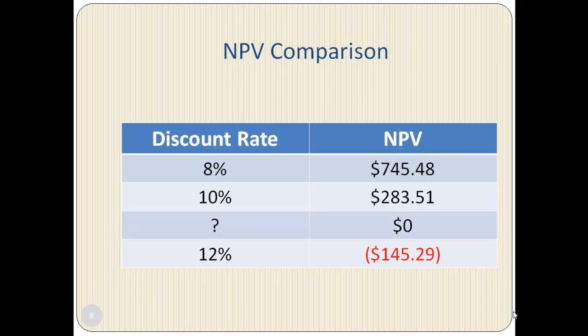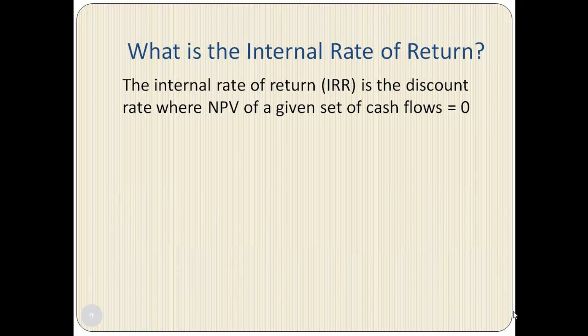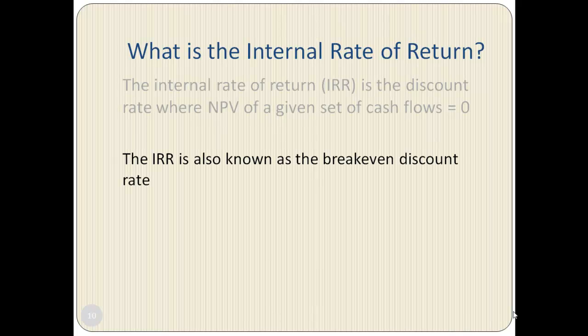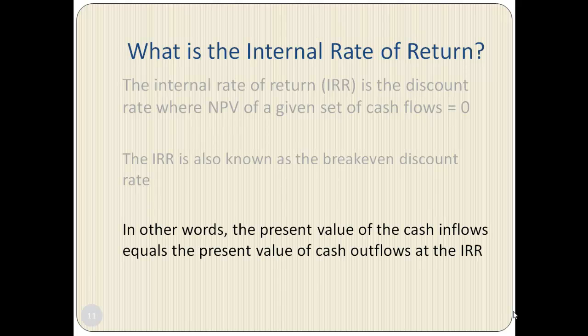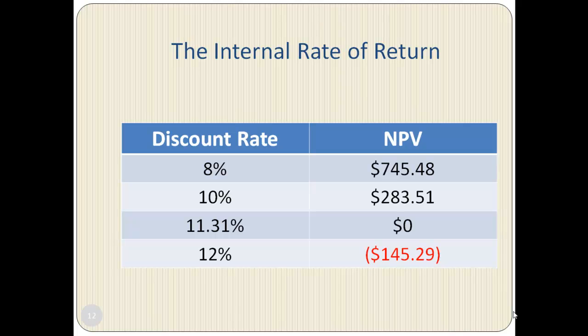This suggests that at some discount rate the NPV equals zero. Our goal is to determine that discount rate. The discount rate where NPV equals zero is known as the internal rate of return, or the IRR. The IRR is also known as the break-even discount rate, because at this discount rate the present value of cash inflows equals the present value of cash outflows.